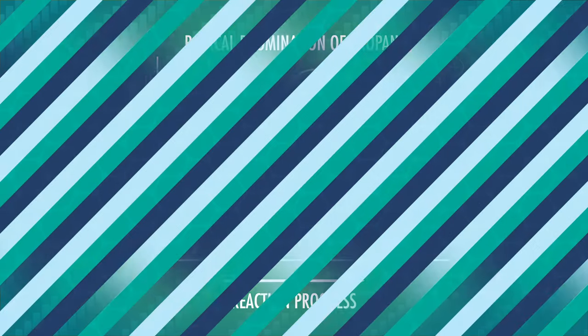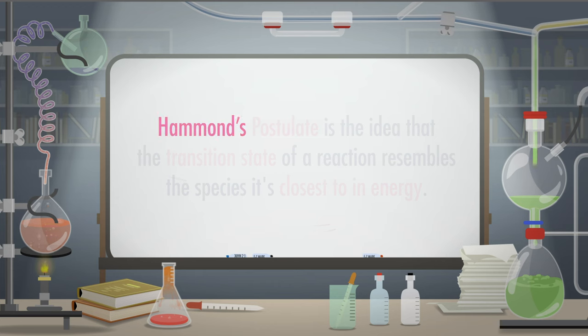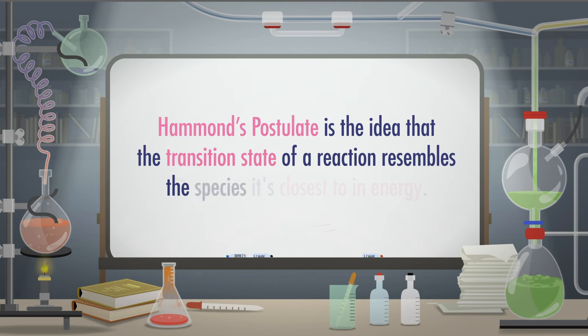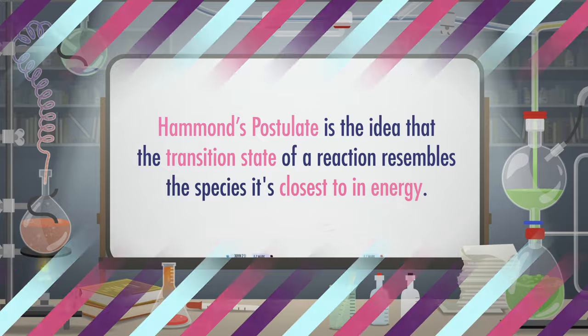We need to look closely at the transition state of these reactions, the peak of the hill on an energy diagram where bonds are partially formed. Hammond's postulate is the idea that the transition state of a reaction resembles the species it's closest to in energy.